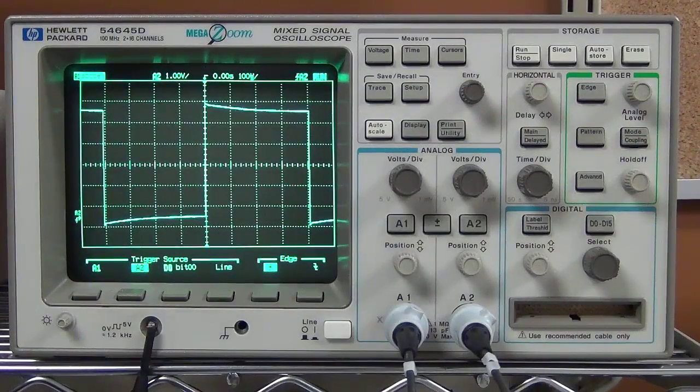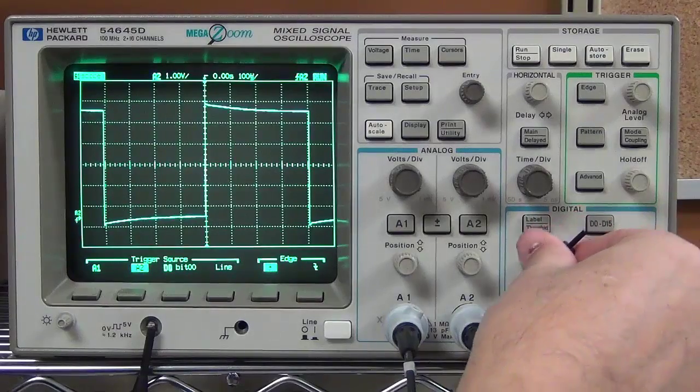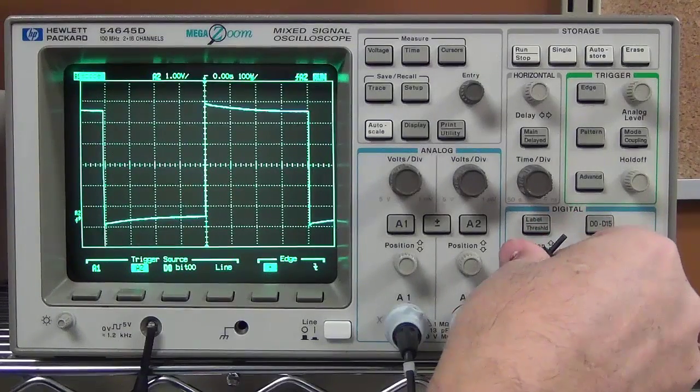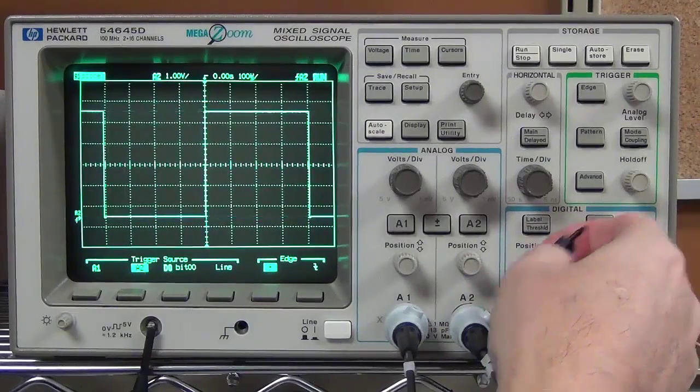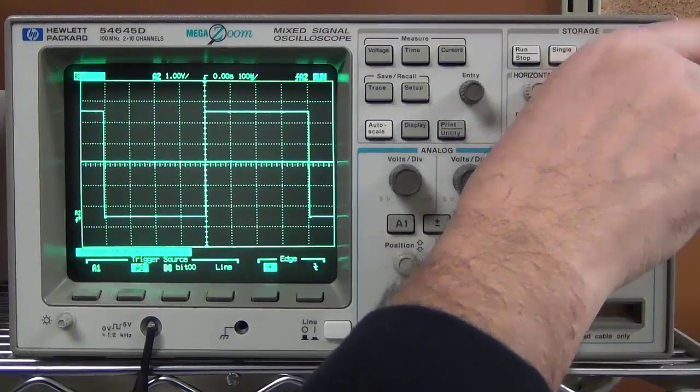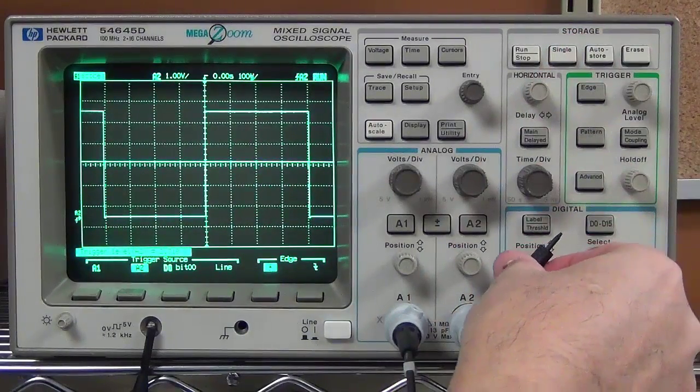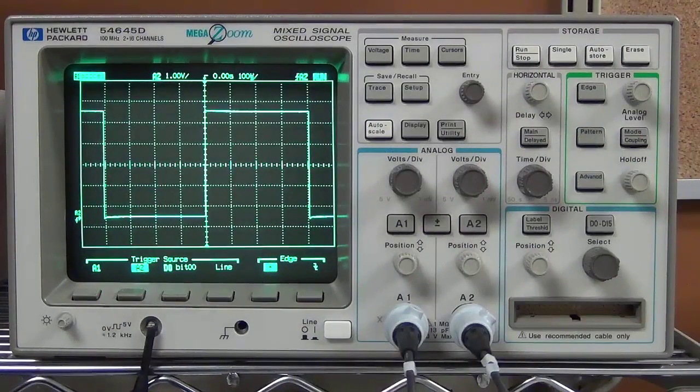And again, make the wave as big as possible for your adjustments. So we can see that it's out a little here. So I'm going to find the screw and adjust it until the wave is square. Move my trigger level up in the middle of the wave. It's calibrated as well.